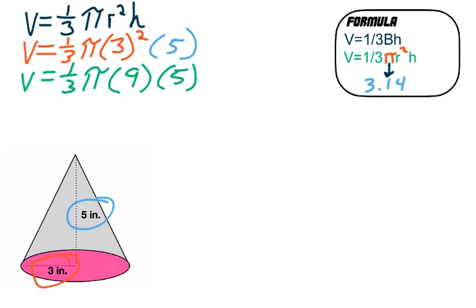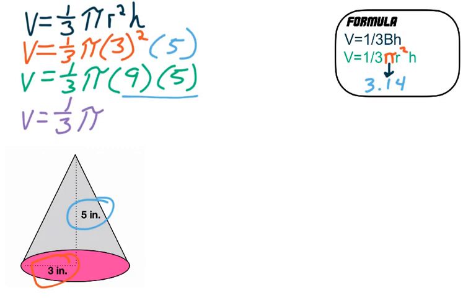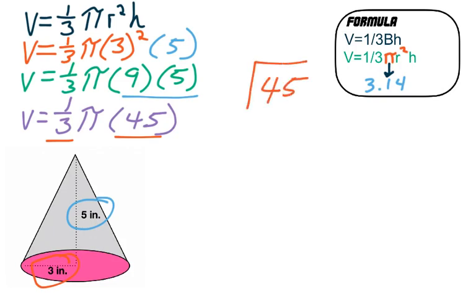Nine times five is 45. Now here's where we do the one-third — we save the pi symbol for very last. One-third of 45 is basically 45 divided by 3, which is 15. So volume equals π times 15. To get our final answer, we just need to multiply 15 times π, which is 3.14 times 15.